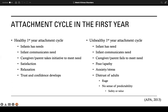Next, we'll touch on the attachment cycle in the first year. For a child, a healthy first-year attachment cycle looks like this: the infant has needs, the infant communicates those needs, the caregiver or parent takes initiative to meet the needs, and the child has satisfaction, relaxation, and trust and confidence develops.